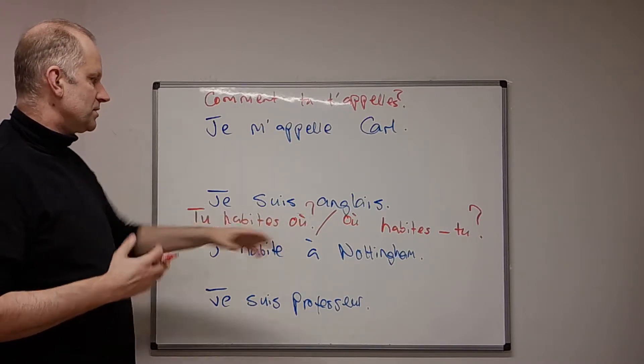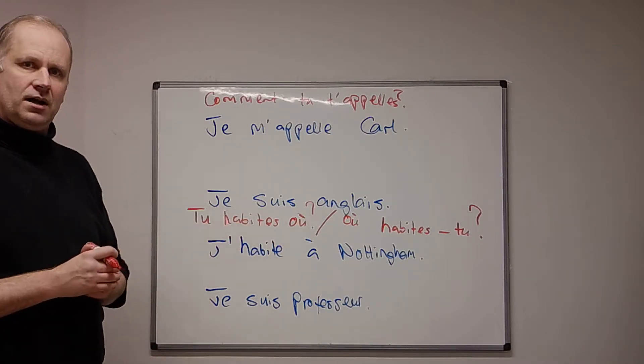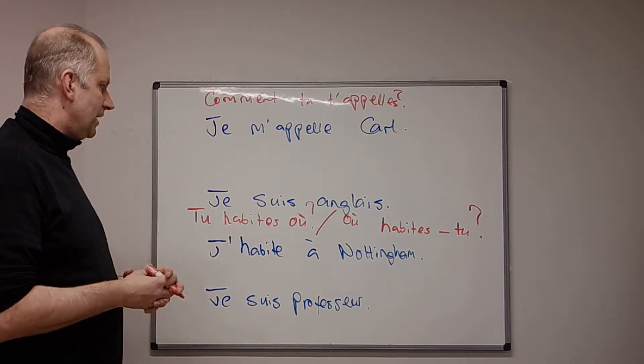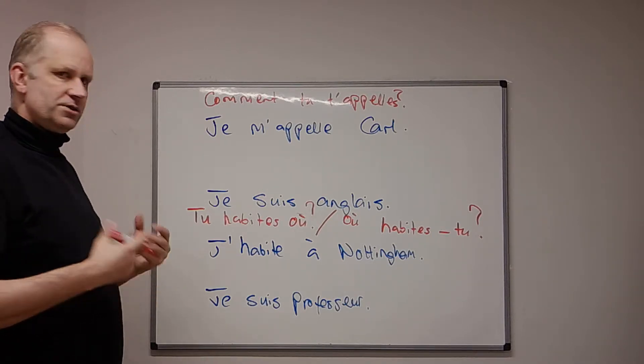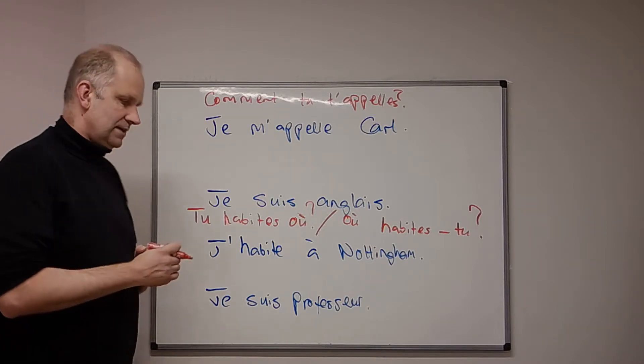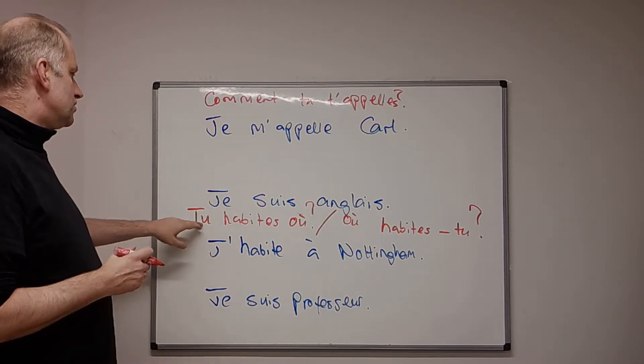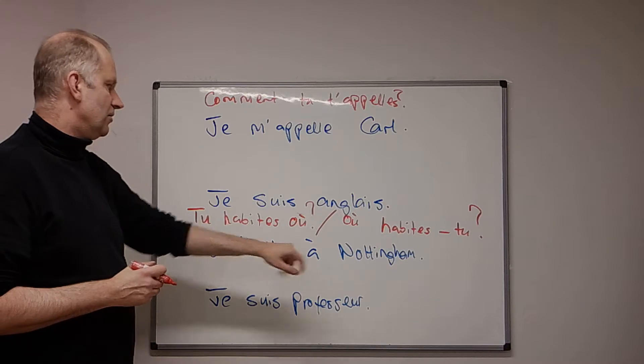Well, it will be with question word, but sometimes when it's a yes no question, it might not be clear you're asking a question unless you sort of make it sound like a song. So, tu habite où? J'habite à Nottingham.